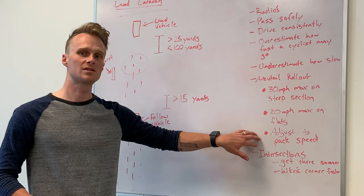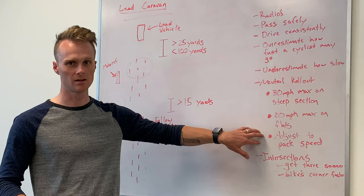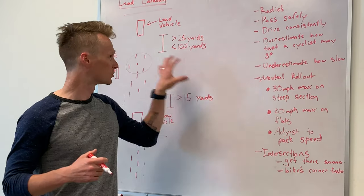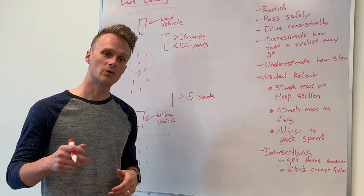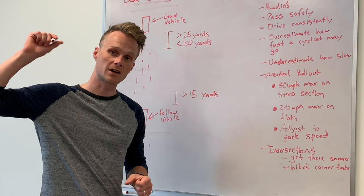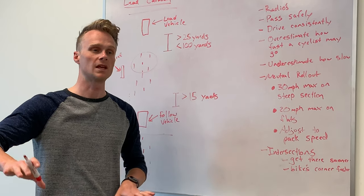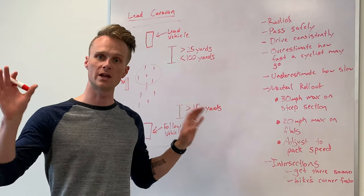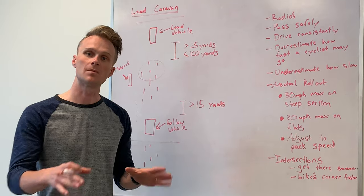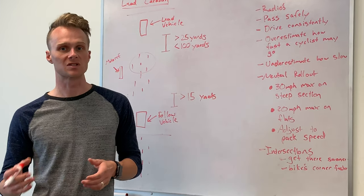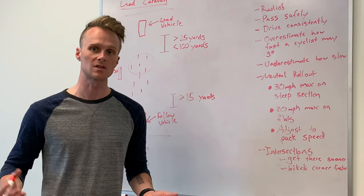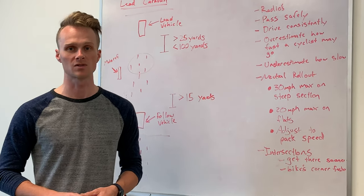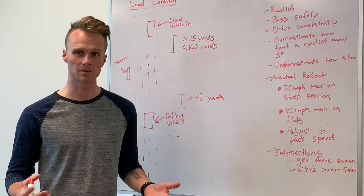Mainly, adjust to the speed of the pack within reason. If you see that during the neutral rollout that riders are 50 meters off the back of you, slow down. If you feel like you're being crowded and the whole pack is right on your tailgate, speed up a little bit. Micro adjustments. For a cyclist, the difference between two miles an hour is very significant. For a motorist, the difference between two miles an hour is almost imperceptible.